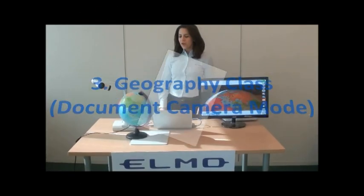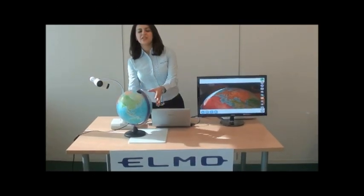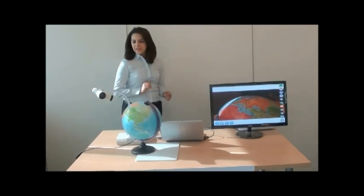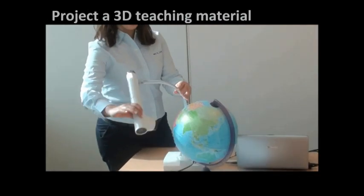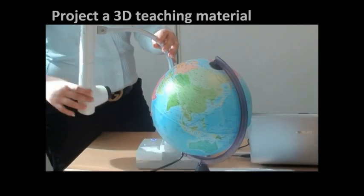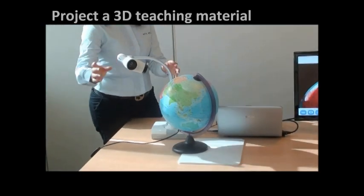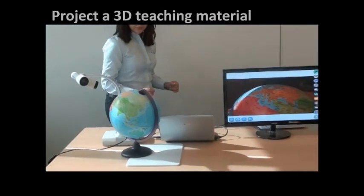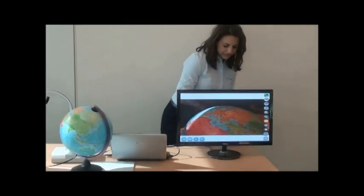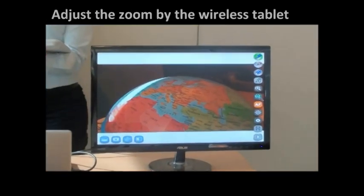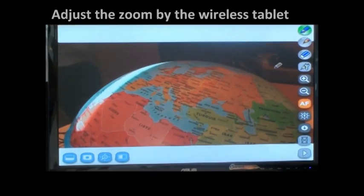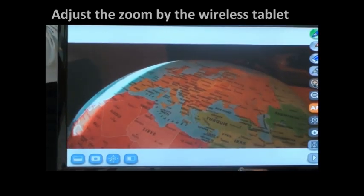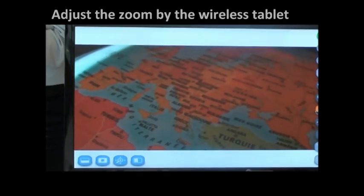So for our geographic class I placed a globe under a camera. And thanks to the flexible arm and head of my camera I can just project a 3D object. So I will take my tablet and I can zoom the part I'm interested with. Like this. So zoom in. Autofocus.